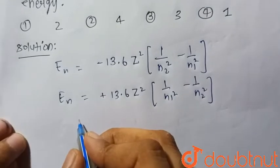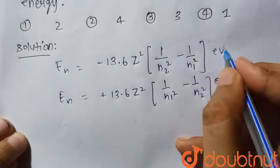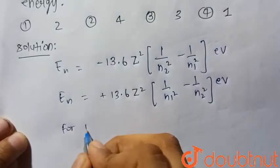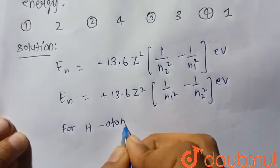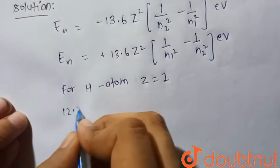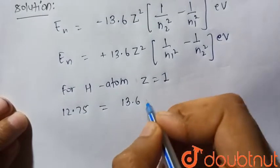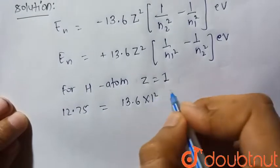For hydrogen atom Z is equal to 1 and energy given in the question is 12.75 electron volt. So it will be equal to 13.6 times Z square, that is 1 square.